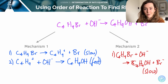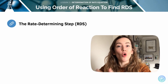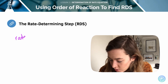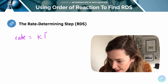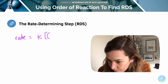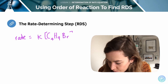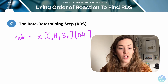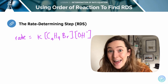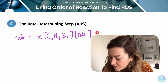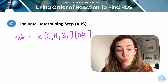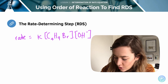Let's look at this in more detail. Experiments have shown that bromobutane has a second order mechanism for this reaction. The rate is equal to K, and the rate is dependent upon the concentration of bromobutane and the concentration of the hydroxide ions, as you can see in the rate equation. This is suggesting that mechanism 2 is the correct mechanism.